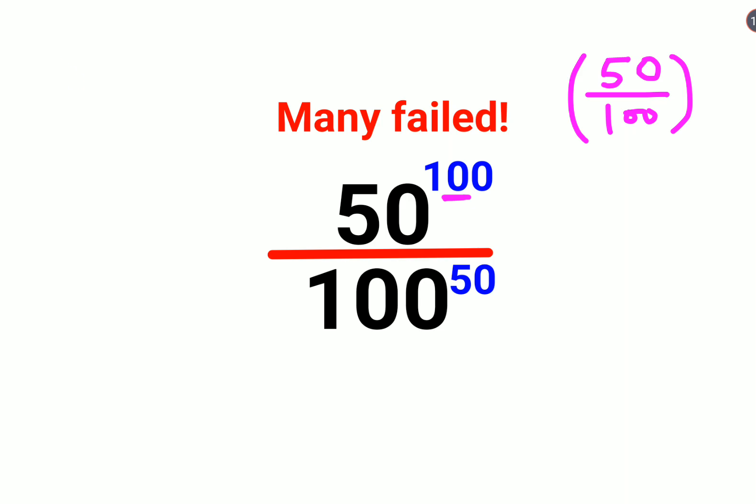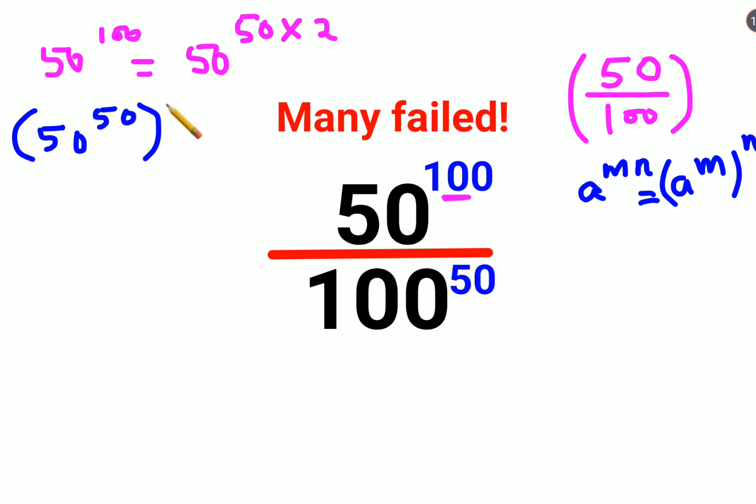Now here 50 raised to 100 can also be written as 50 raised to 50 into 2. And 100 can be written as 50 into 2. Now very important thing: A raised to M into N can be written as A raised to M the whole raised to N. So similarly I can write this as 50 raised to 50 the whole raised to 2.